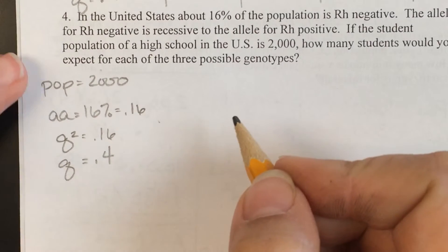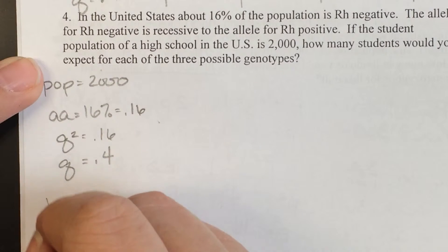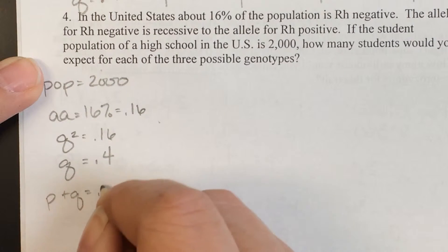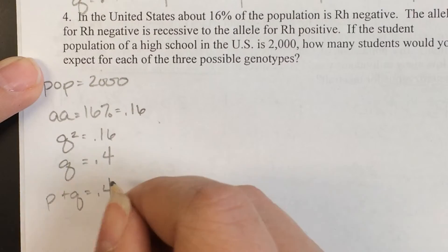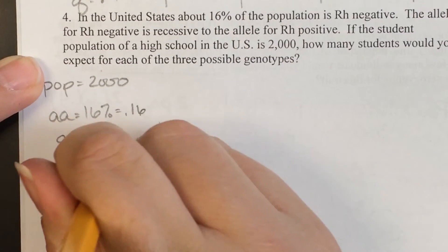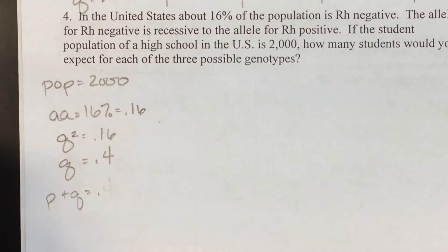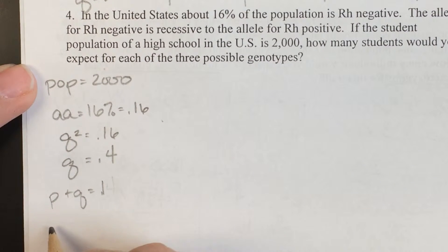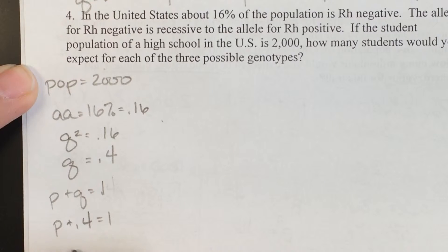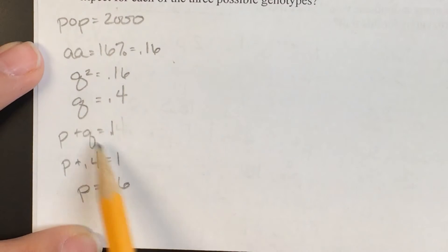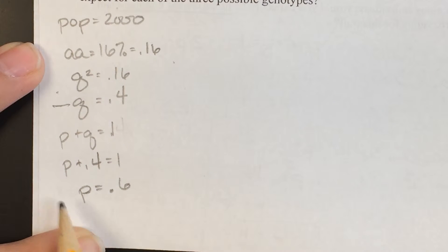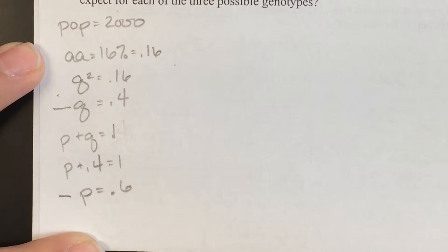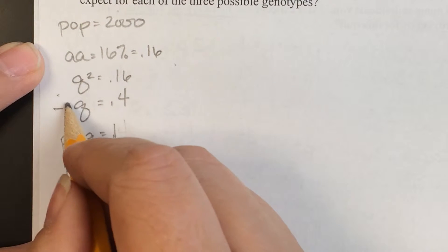If we apply that to our p plus q equals 1 formula: p plus 0.4 equals 1, which means p must be equal to 0.6. So my q value is 0.4 and my p value is 0.6.